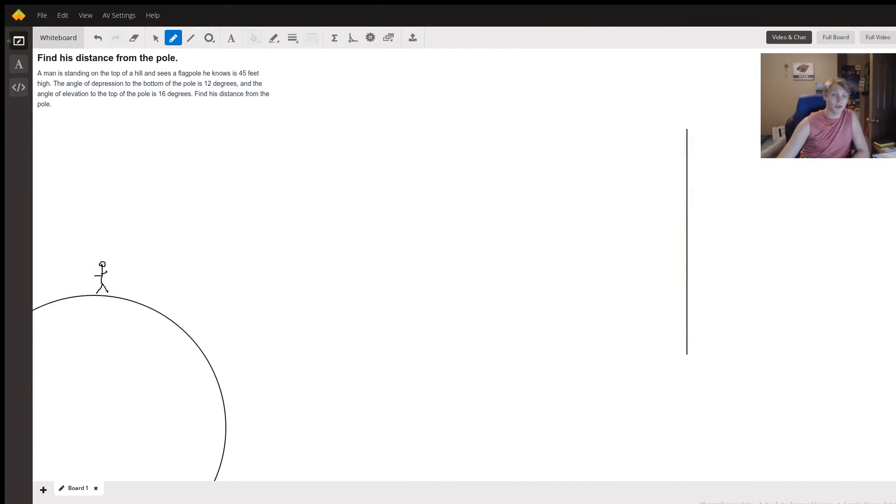Hi, so here we have a question asking us to find the distance from a flagpole given the height of the flagpole and the angle of our head as we look up and down at it.